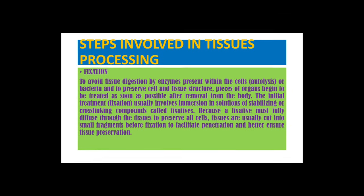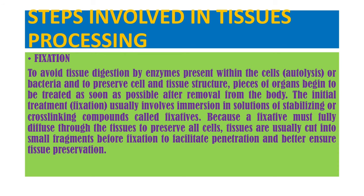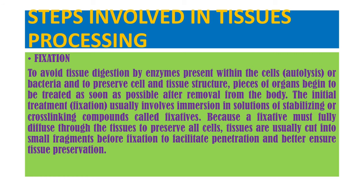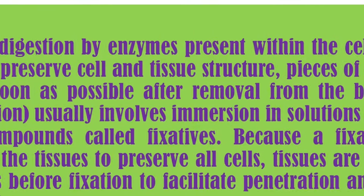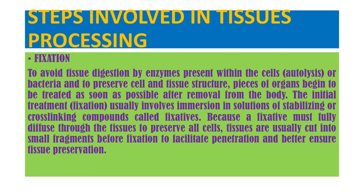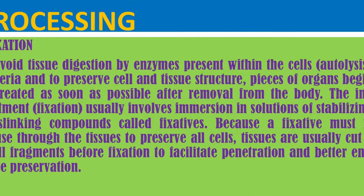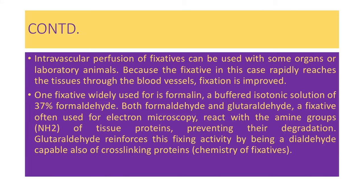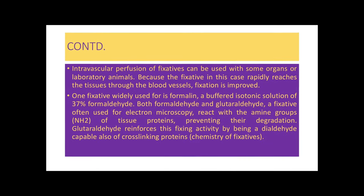The first step is fixation. We perform fixation to avoid tissue digestion by enzymes present within the cells or bacteria, and to preserve cell and tissue structure. Pieces of organs should be treated as soon as possible after removal from the body. The initial treatment involves immersion in solutions of stabilizing or cross-linking compounds called fixatives. Because a fixative must fully diffuse through the tissues, tissues are usually cut into small fragments before fixation. Intravascular perfusion of fixatives can be used with some organs or laboratory animals, as the fixative rapidly reaches tissues through blood vessels.